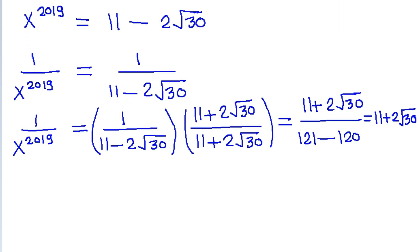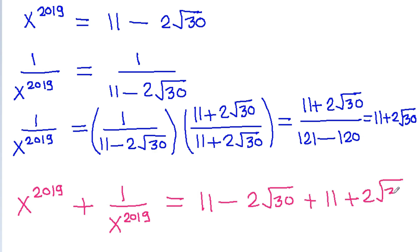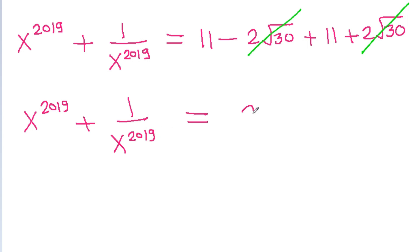Now if we compute x to the power 2019 minus 1 by x to the power 2019, then it will be 11 minus 2 root 30 minus 11 plus 2 root 30. The terms with 2 root 30 cancel, and we get x to the power 2019 minus 1 by x to the power 2019 is equal to 22.